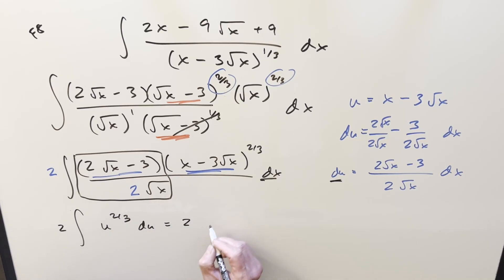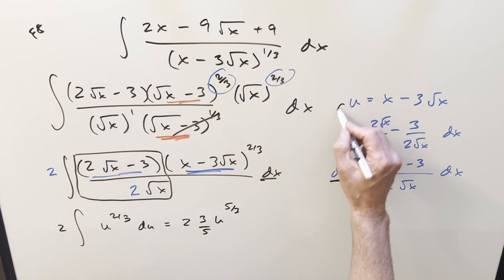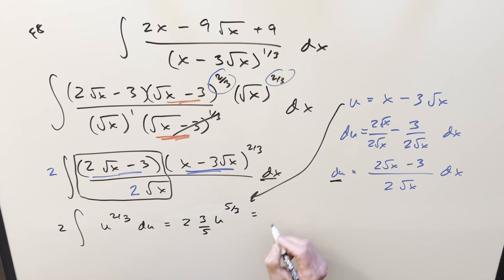Go ahead and integrate with power rule. We get u 5/3, reciprocal times 3/5. Go ahead and back substitute. So for my final solution on this, we just get 6 over 5, x minus 3 square root of x to the 5/3. Add a plus c. And that's it.